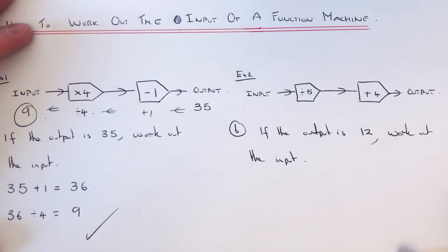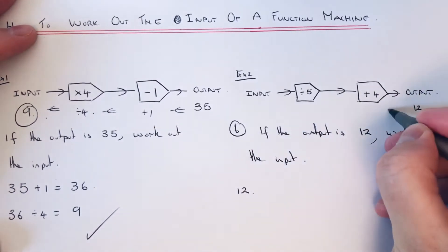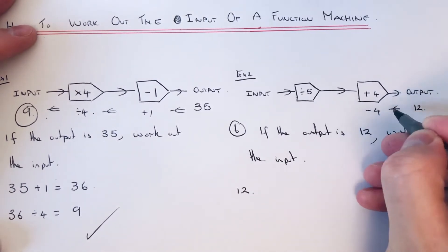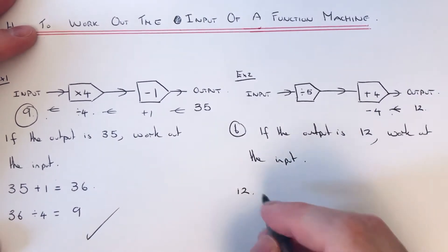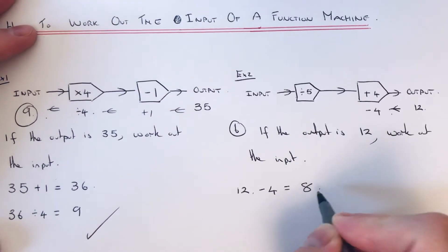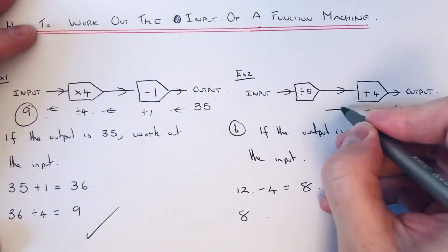Let's have a look at the second example. If the output is 12, work out the input. We've got the output of 12, so again work our way backwards. If we do the opposite to plus 4, which is take away 4, so 12 take away 4 gives 8. Let's copy that to the next line.